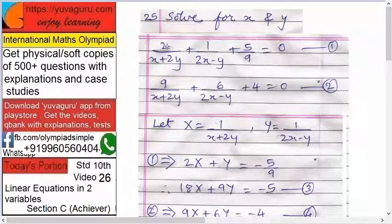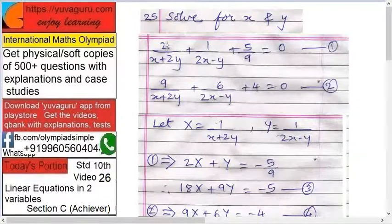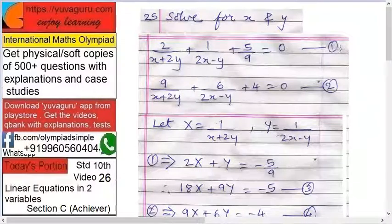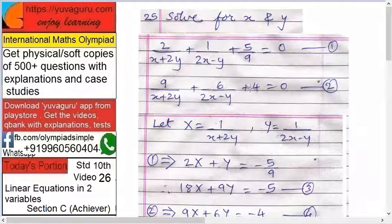So what are the equations given? Solve means you have to find the value of x and y. So 2 upon x plus 2y plus 1 upon 2x minus y plus 5 upon 9 equals to 0, this is equation number 1. And 9 upon x plus 2y plus 6 upon 2x minus y plus 4